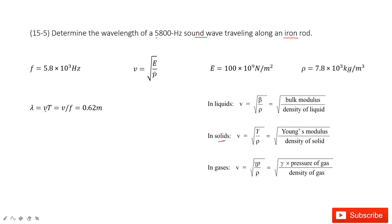Now, so we use E over rho. E is Young's modulus. Check your textbook, find Young's modulus for the iron and the density for this iron. Then you input it inside, get the wave speed and input in this equation. Get the answer there. Thank you.